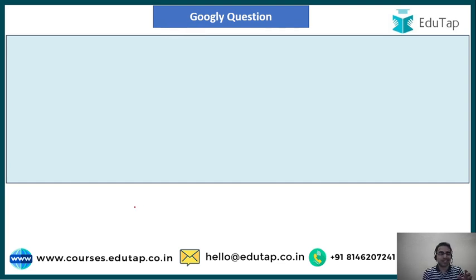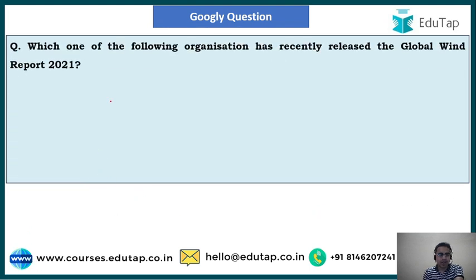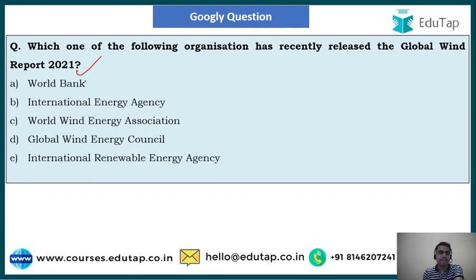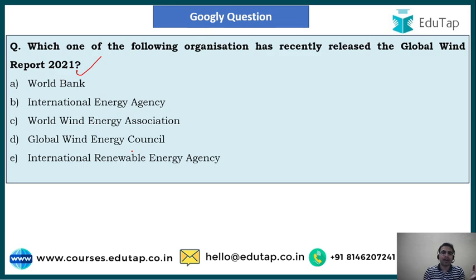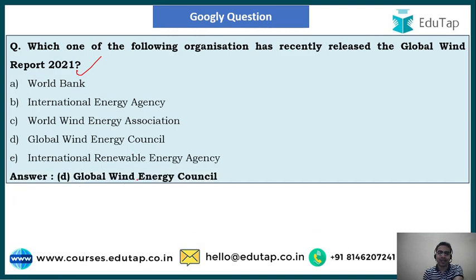Now a googly question — let's see who can crack it. Which one of the following organizations has recently released the Global Wind Report 2021? Options: A) World Bank, B) International Energy Agency, C) World Wind Energy Association, D) Global Wind Energy Council, E) International Renewable Energy Agency. Always try to cover important current affairs reports and indices, as they can appear in googly questions. The right answer is option D — the Global Wind Energy Council has released the Global Wind Report 2021.